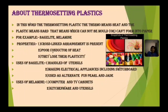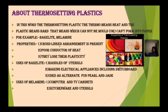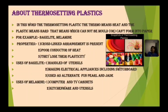Properties of thermosetting plastic: cross-linked arrangement, poor conductors of heat, and they lose their plasticity — they are not easily melted. Uses of bakelite: handles of utensils, making electrical appliances including switchboards, and also used as an alternative for pill and jet materials. Uses of melamine: computer and TV cabinets, kitchenware and utensils.